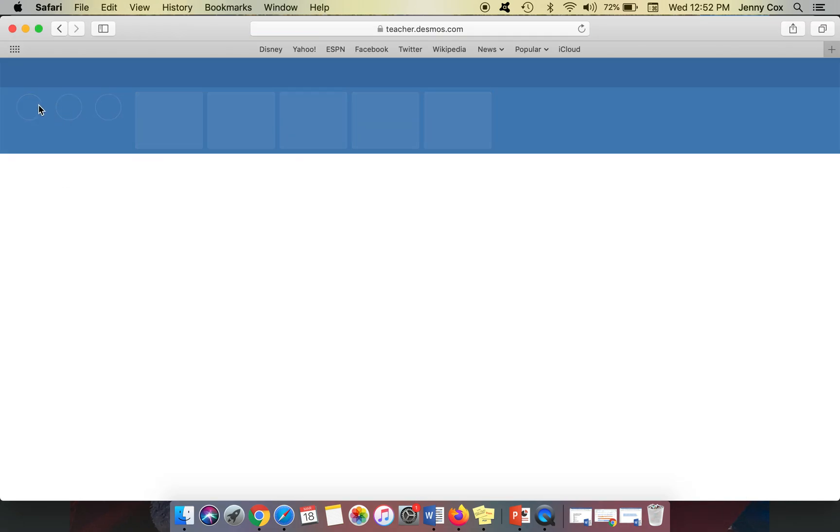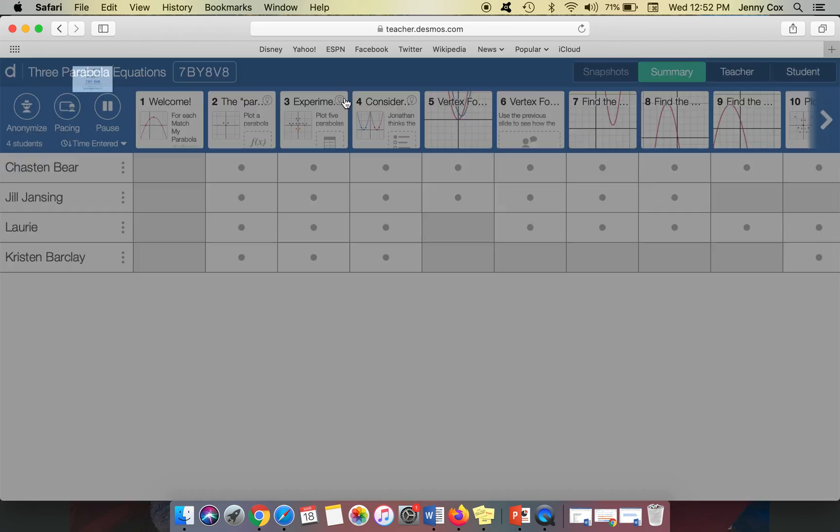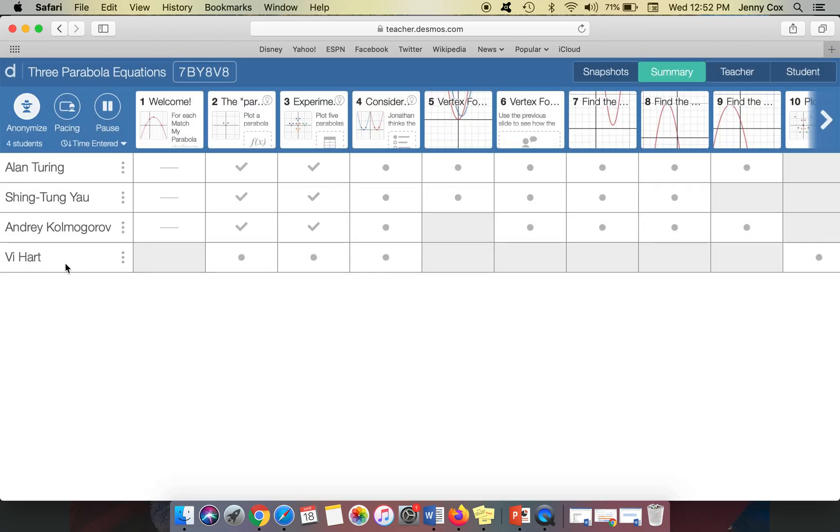So if I hit view dashboard, I can make it anonymous by clicking this button that says anonymize. And so I have Alan Turing and Vi Hart and so on. And so I can see how they were doing with these problems.